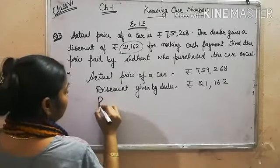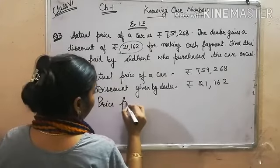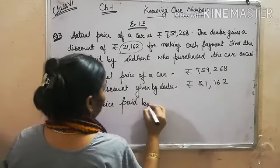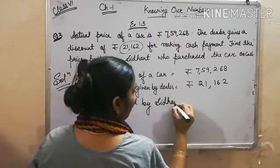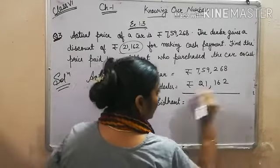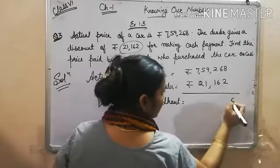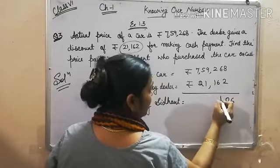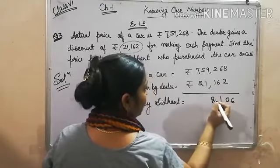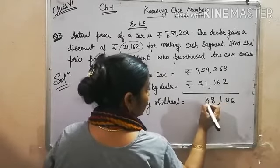Price paid by Siddhant: Just find the difference of two numbers. 8 minus 2 is 6, 6 minus 6 is 0, 2 minus 1 is 1, 9 minus 1 is 8, 5 minus 2 is 3.